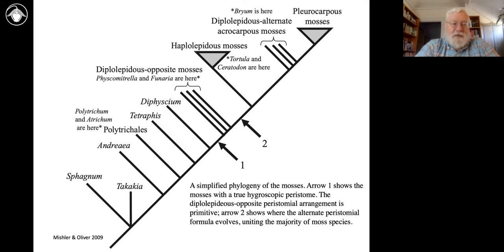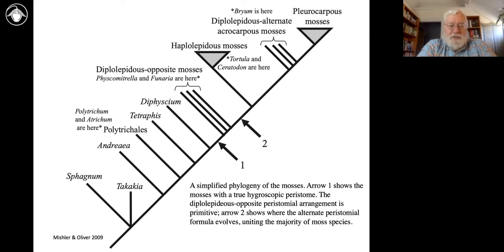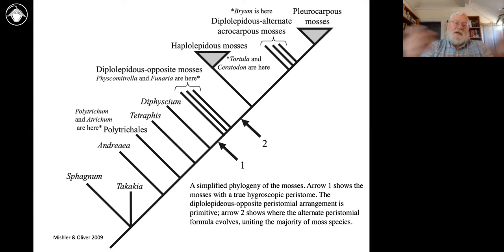Sphagnum controls the whole hydrology of the environment, the acidity, and what can grow there. So Sphagnum is really very different from other mosses, and when you go to key out a Sphagnum you have to learn a whole new vocabulary because they're constructed quite differently. They're a moss, but they're deep — hundreds of millions of years of time separate them from the other mosses, so they've had plenty of time to develop a lot of unusual characteristics.